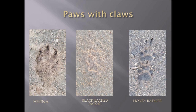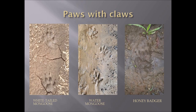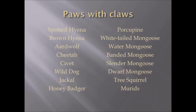The front foot is shown on top, with the back foot stepping partially on the back edge of the front pad. The white-tailed mongoose on the left also has paws with claws but with narrower digits typical of the mongoose family. The iron track has a very square pad. In the middle are the narrower toes of water mongoose, and on the right a honey badger with a very foot-like pad structure. Animals with paws and claws visible in tracks include spotted hyena, brown hyena, aardwolf, cheetah, civet, wild dog, jackal, honey badger, porcupine, white-tailed mongoose, water mongoose, banded mongoose, slender mongoose, dwarf mongoose, tree squirrel, and murids or rodents.